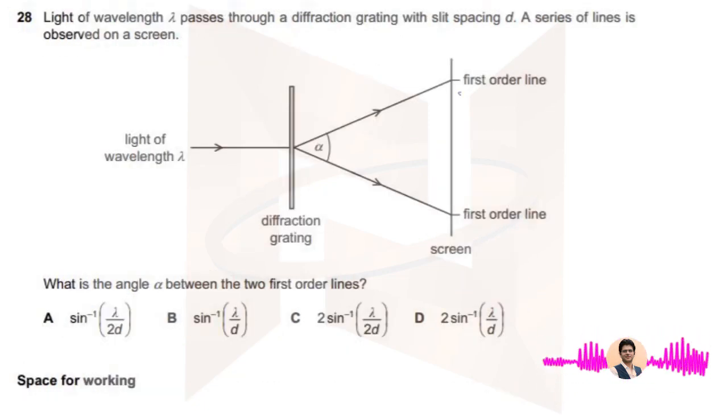Number 28, this is the first order line, so n is equal to 1, but just remember that the angle reference is always with n is equal to 0, so alpha has to be divided by 2.